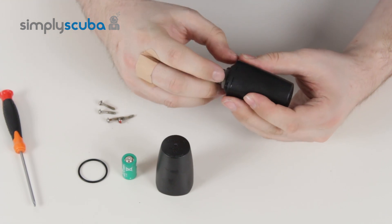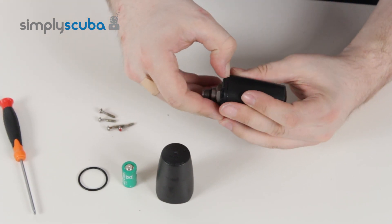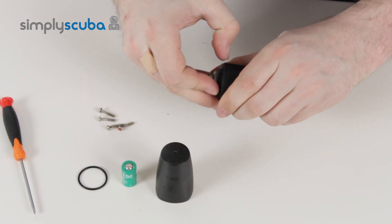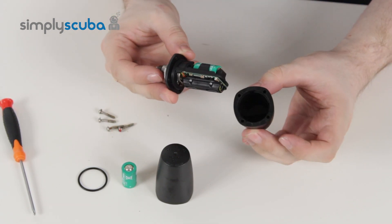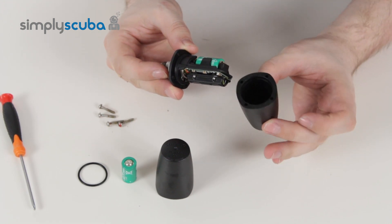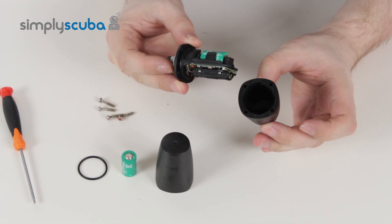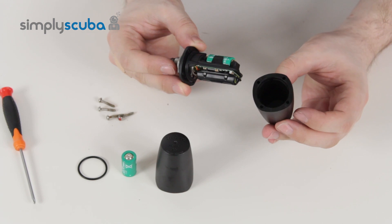You can either use a small flat head screwdriver, just be very gentle because this is all quite soft plastic. You just want to pull those two sections apart, and then that comes away. You can keep that or throw it away because you do get a new one in the battery kit.